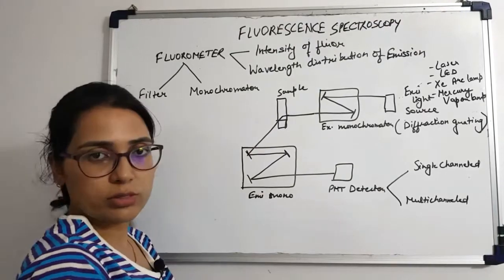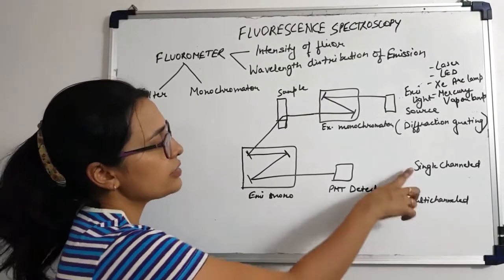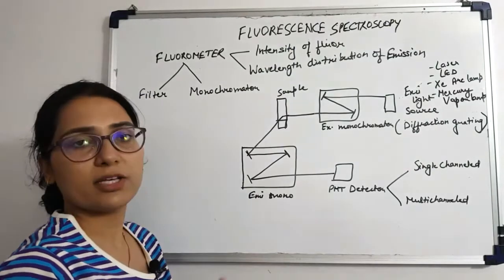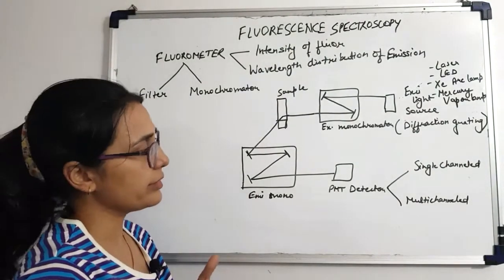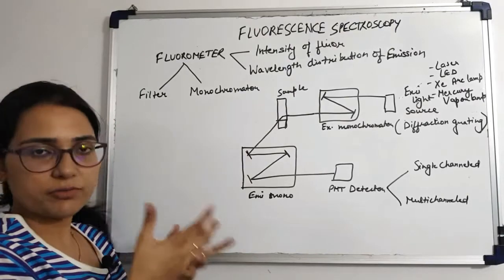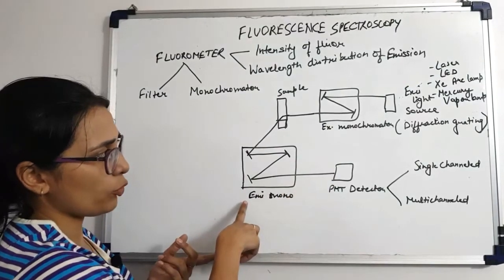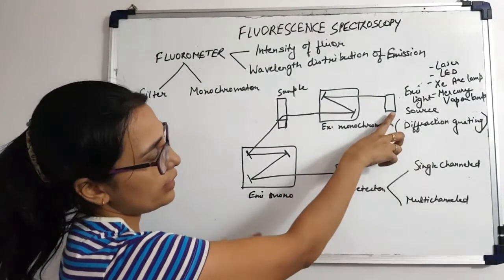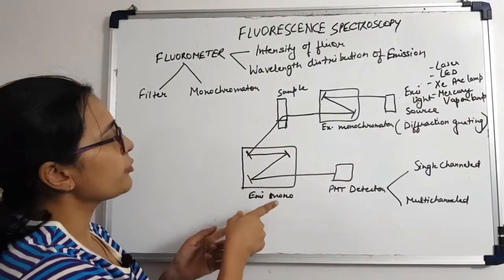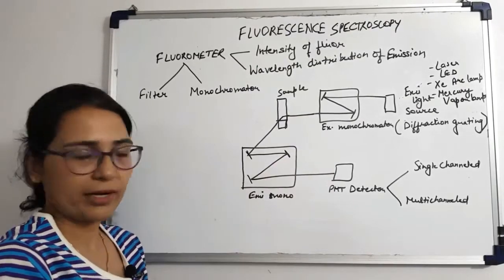The detector used in fluorescence spectroscopy can be either single-channeled or multi-channeled. A single-channel detector can only measure the intensity of one wavelength at a time, while a multi-channel detector can measure the intensity of all wavelengths simultaneously — so if you're using a multi-channel detector you don't need an emission monochromator. The most versatile fluorometers used today consist of two monochromators — one excitation and one emission — and contain a xenon arc lamp as the excitation source, allowing generation of both excitation spectra and fluorescent spectra.